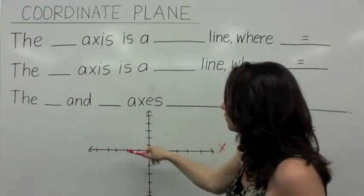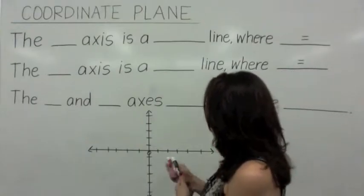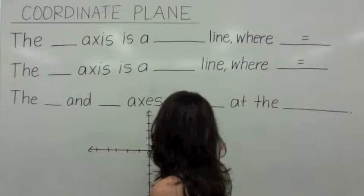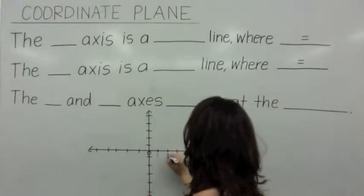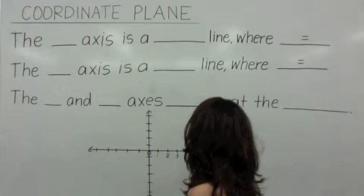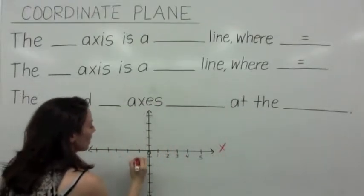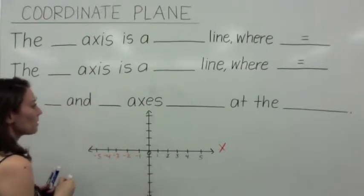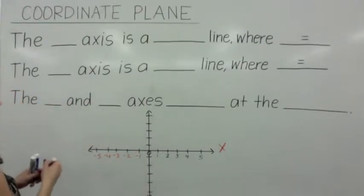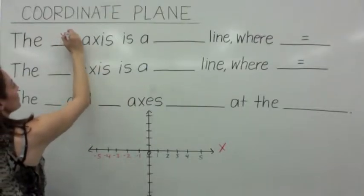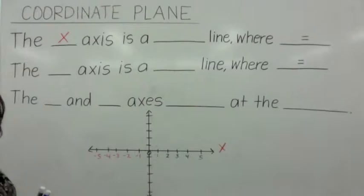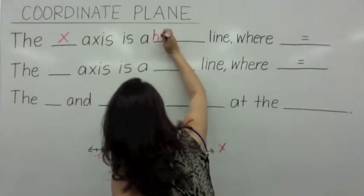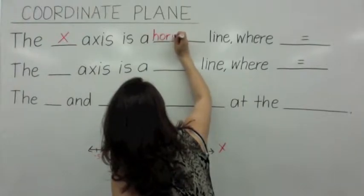Go ahead and draw it. You have a horizontal line. In the positive direction, of course, we have our positive numbers: one, two, three, four, and five. And in the negative direction to the left, we have negative one, negative two, negative three, negative four, negative five. So the x-axis is what kind of a line? It is a horizontal line. It goes side to side, horizontal like the horizon.